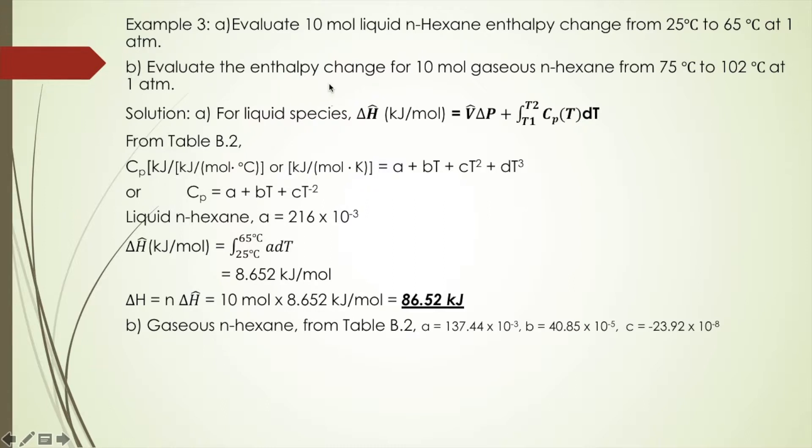Part B: Evaluate the enthalpy change for 10 mol gaseous n-hexane from 75°C to 102°C at 1 atm. Again, the pressure is constant, so we still use heat capacity at constant pressure and substitute the constants from the table into this equation. Then you can calculate the answer using your scientific calculator.